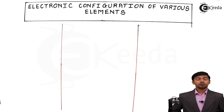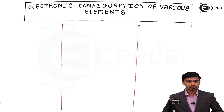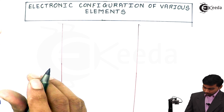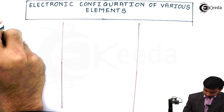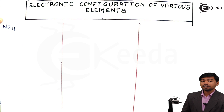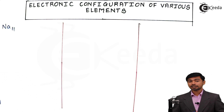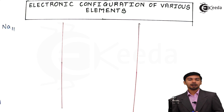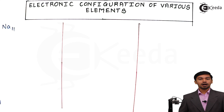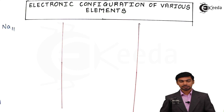Hello everyone. Now we are going to see some examples of electronic configurations. If we take the example of sodium, sodium has atomic number 11, meaning it has only 11 electrons. These electrons are arranged according to the Aufbau principle, Pauli's exclusion rule, and Hund's rule of maximum multiplicity.